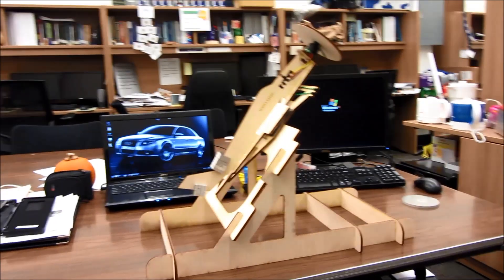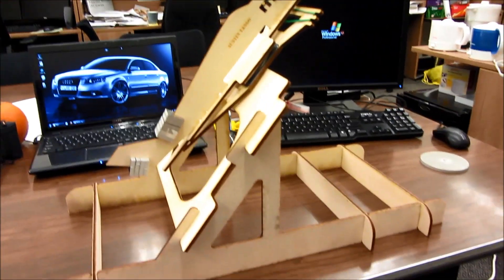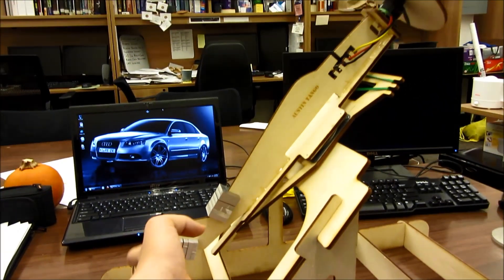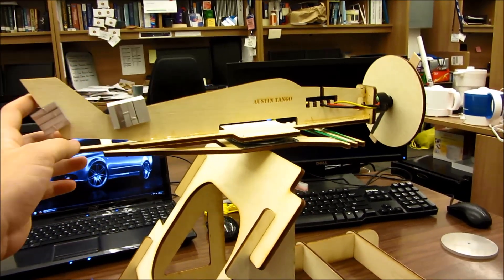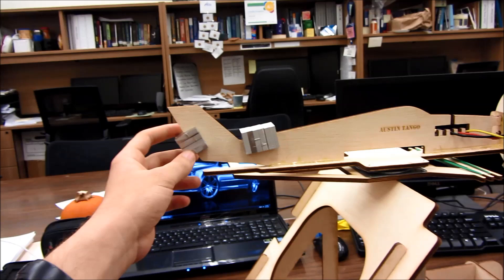Alright, I guess I'll just start off with a little summary of my device here. Basically, it consists of two parts: we've got our base and then our simulated aircraft. It looks pretty much like an aircraft, so that part's self-explanatory.